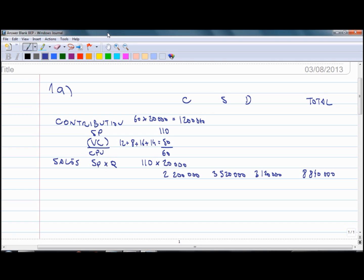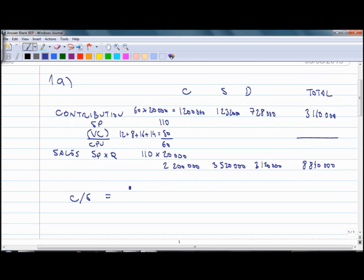Therefore contribution per unit is 60 dollars. Total contribution for product C is 60 dollars times quantity 20,000 units. That will come to 1,200,000. Similarly you can calculate total contribution for product S which comes to 1,232,000, and for product D which comes to 728,000. Total contribution equals 3,160,000. Now to calculate contribution to sales ratio we need to divide contribution by the sales. That will be 35.75 as they wanted it to two decimal places.